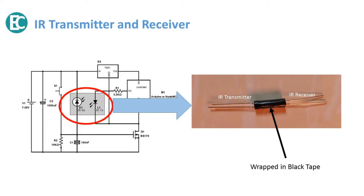This IR transmitter and receiver shown in the red circle is implemented like this. The IR transmitter and receiver are shown. This transmitter-receiver pair is wrapped in black tape so that ambient light does not fall on the IR receiver.